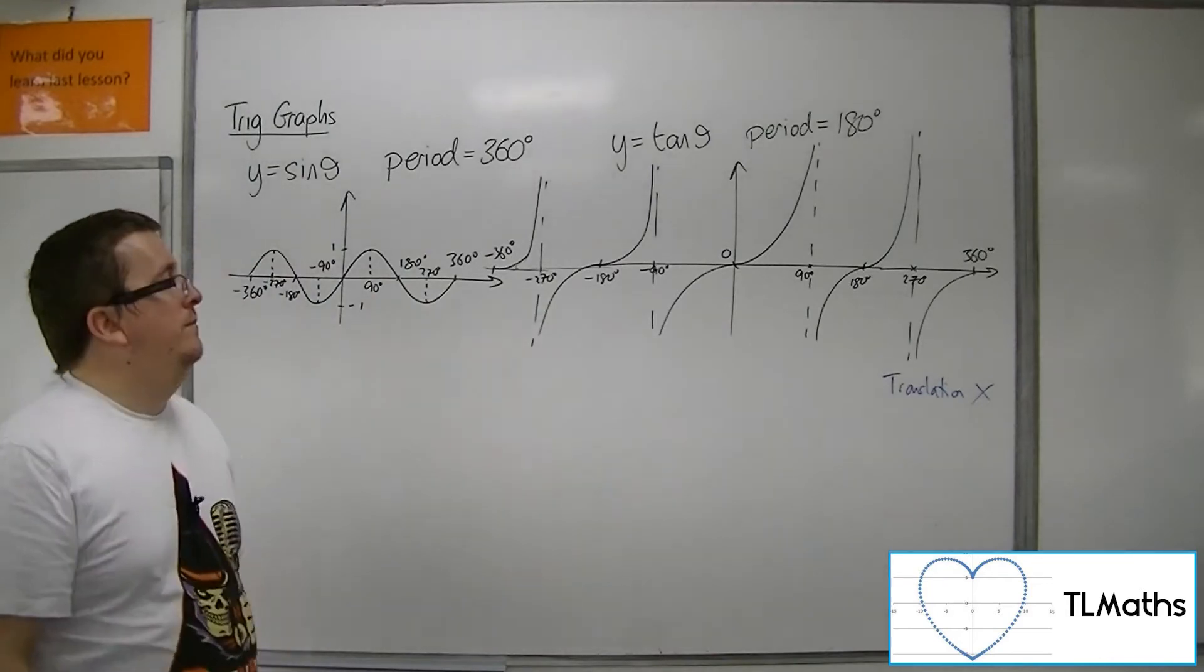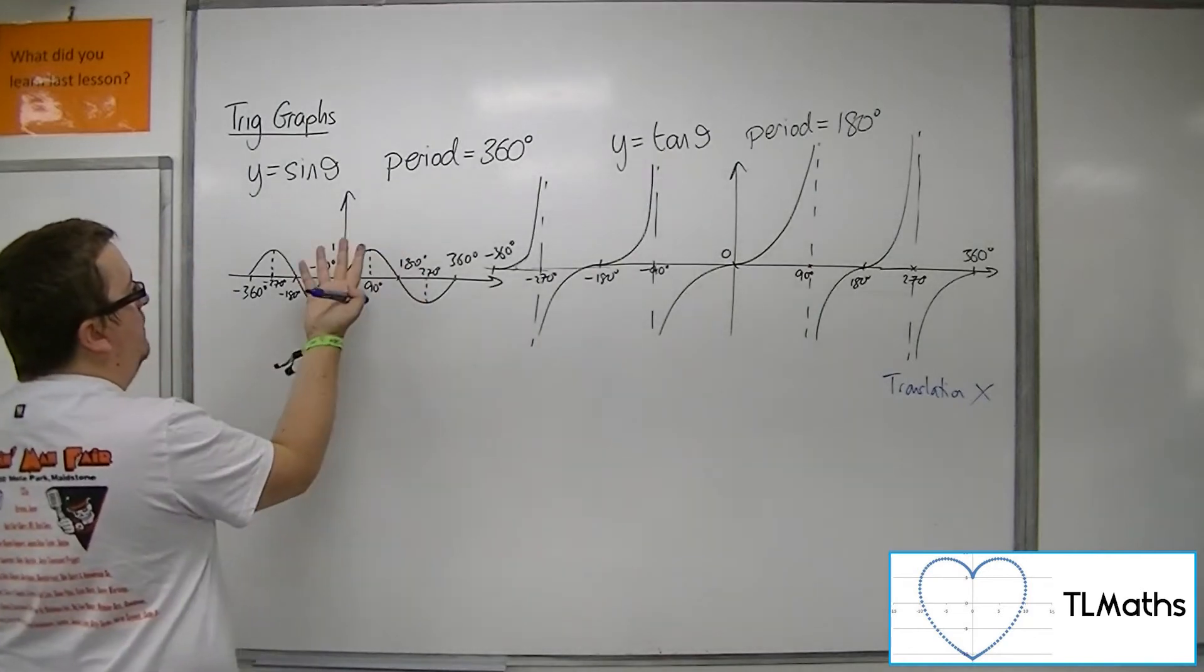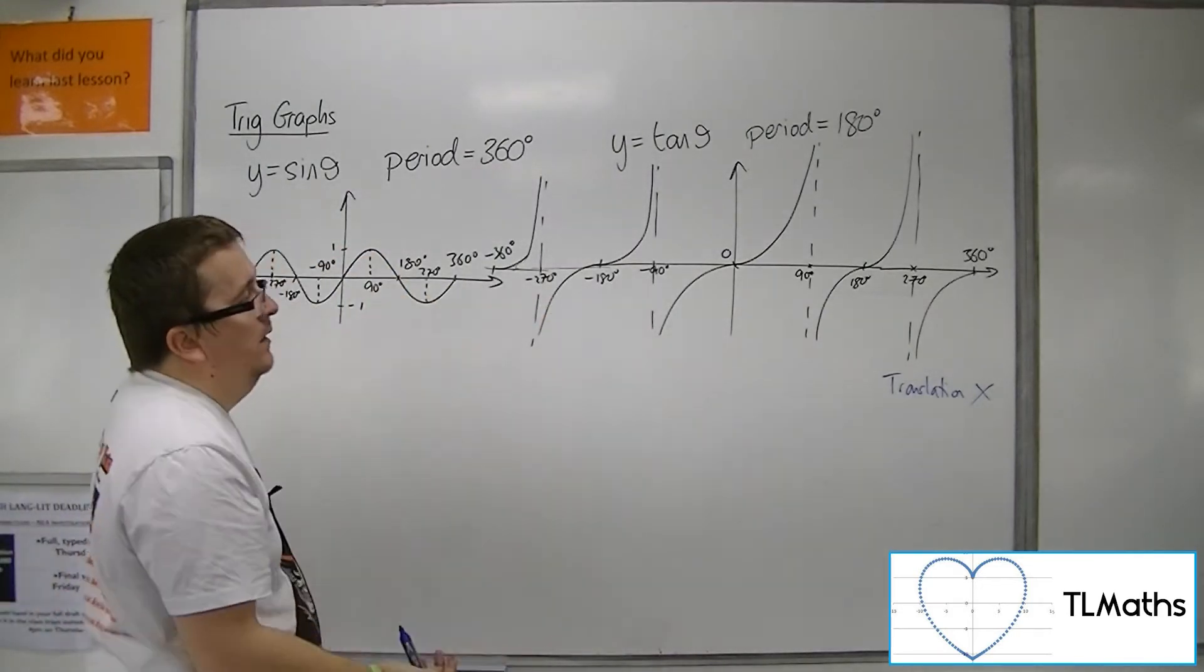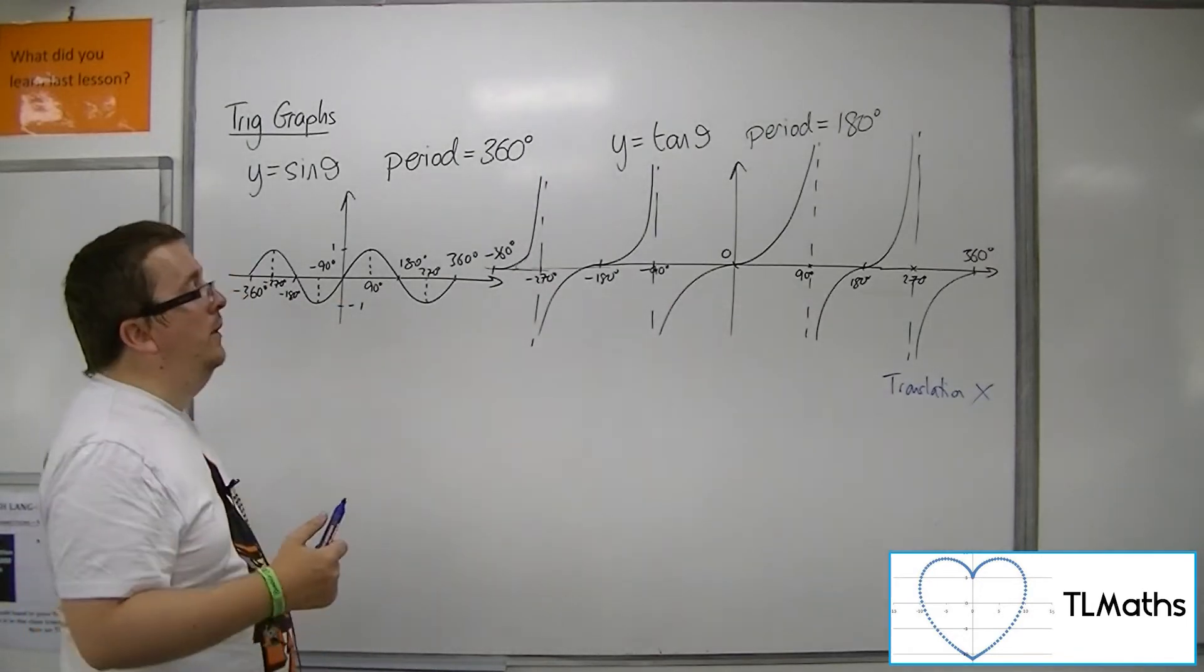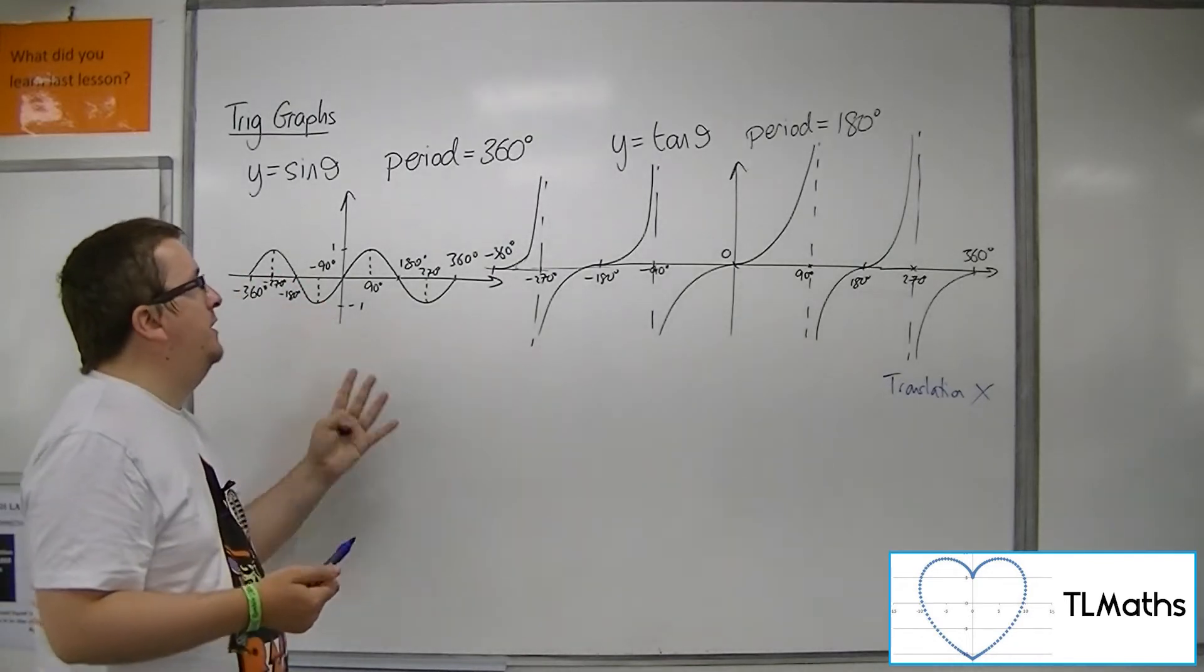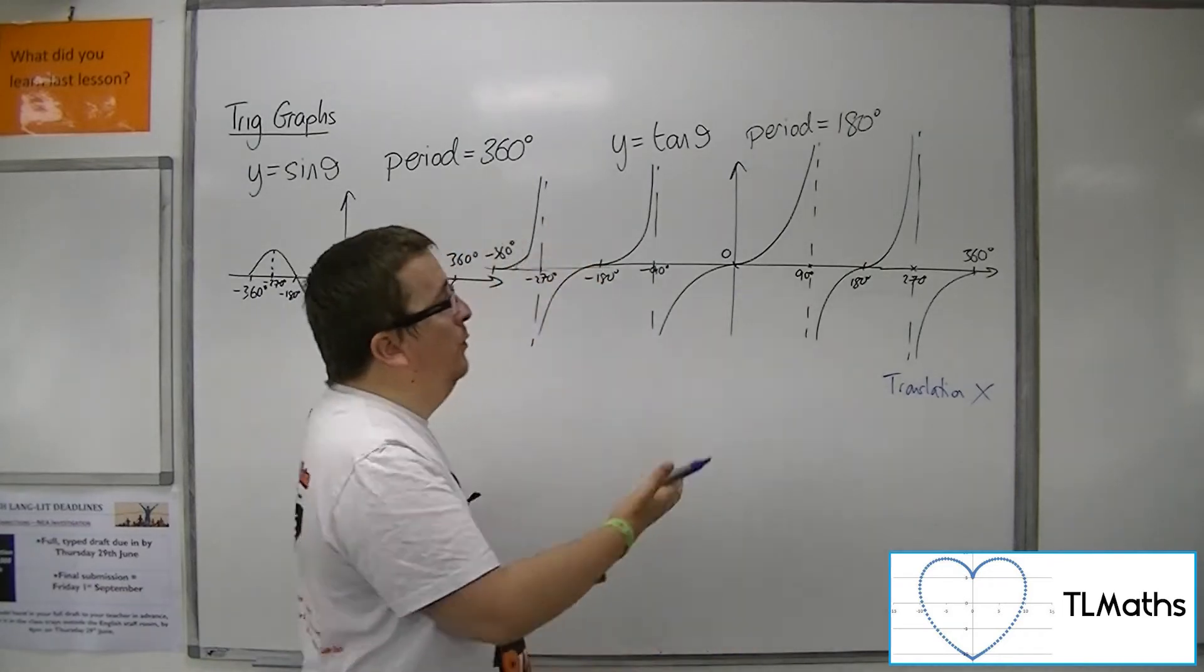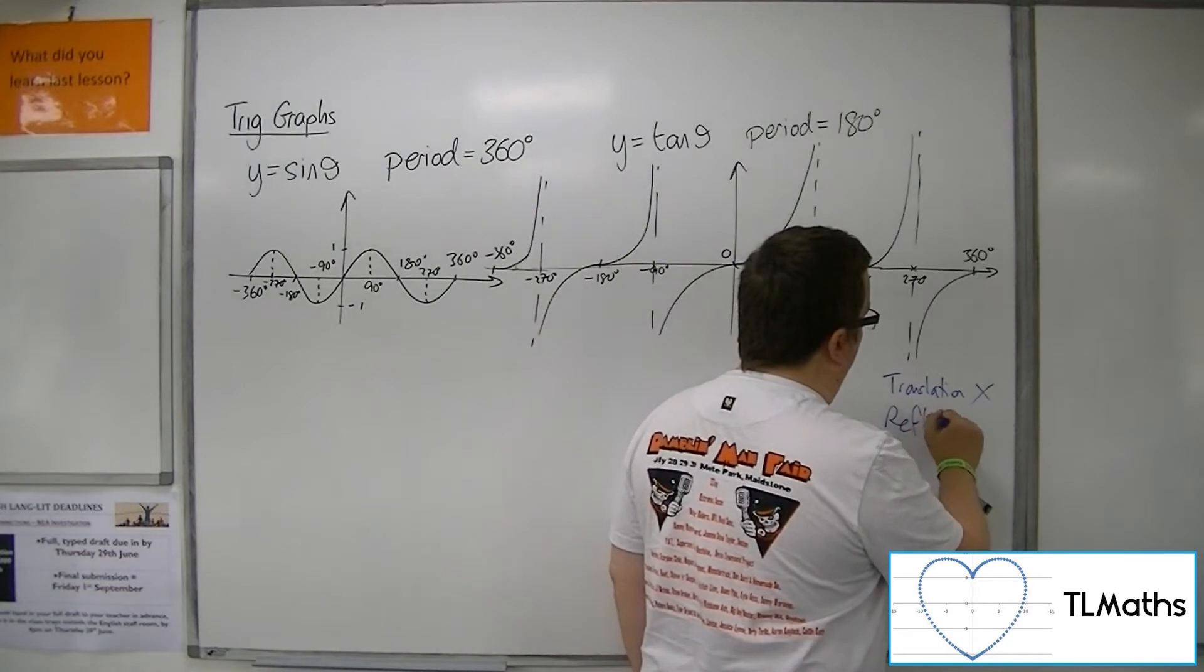How about reflection? Well, if I reflect this in the y-axis or in the x-axis, or this one, the actual part that is repeating itself will not change. This sine curve, if I reflected it in the y-axis or the x-axis, will still have a period of 360, and tan will still have a period of 180. So reflection wouldn't make any difference to the period either.